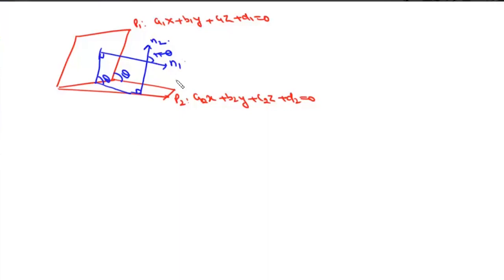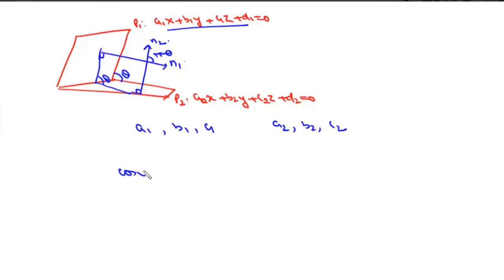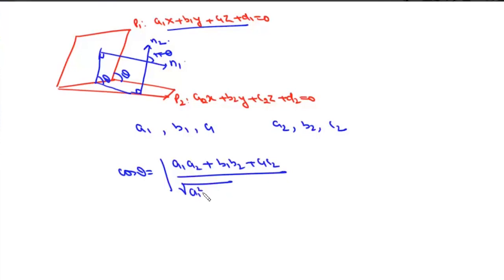To find the angle between two planes, we need the direction ratios of their normals: a1, b1, c1 and a2, b2, c2. The angle is given by: cos(theta) = |a1*a2 + b1*b2 + c1*c2| / (sqrt(a1² + b1² + c1²) * sqrt(a2² + b2² + c2²)).